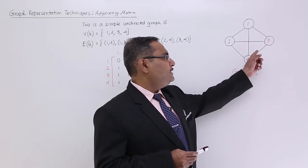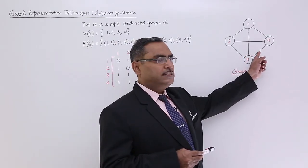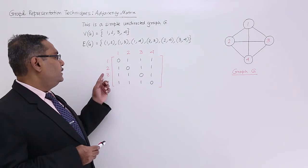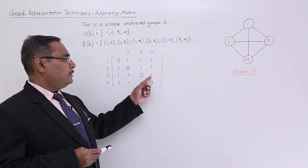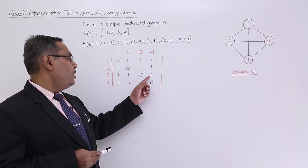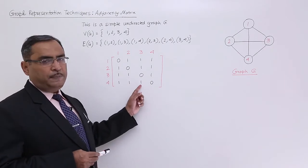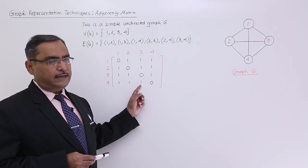Let us suppose this edge is not existing - that is the edge between 3 and 4. Then at position (3,4), this particular place will have value 0, and at position (4,3), this particular place will have value 0 in that case.